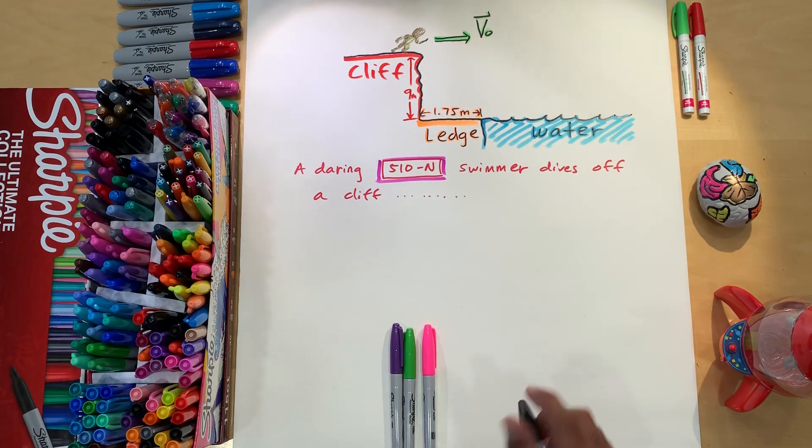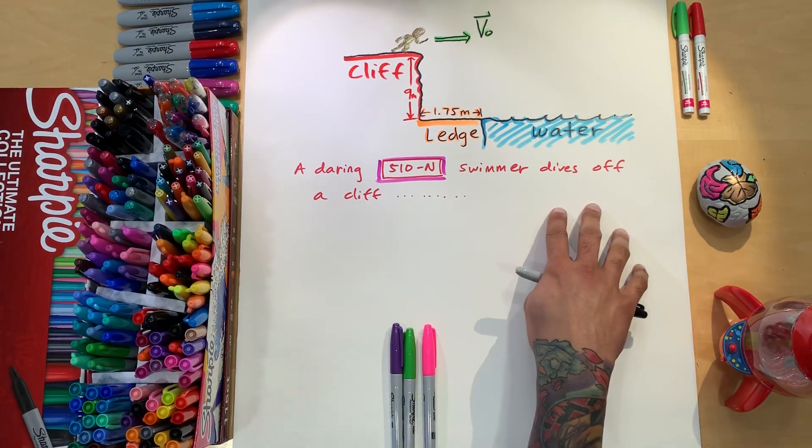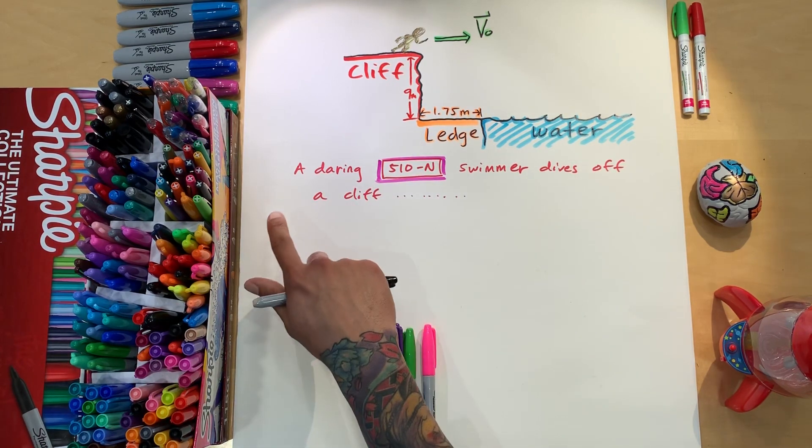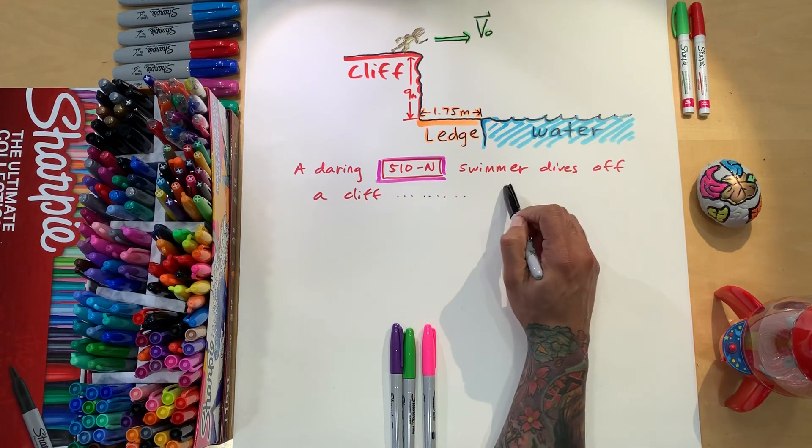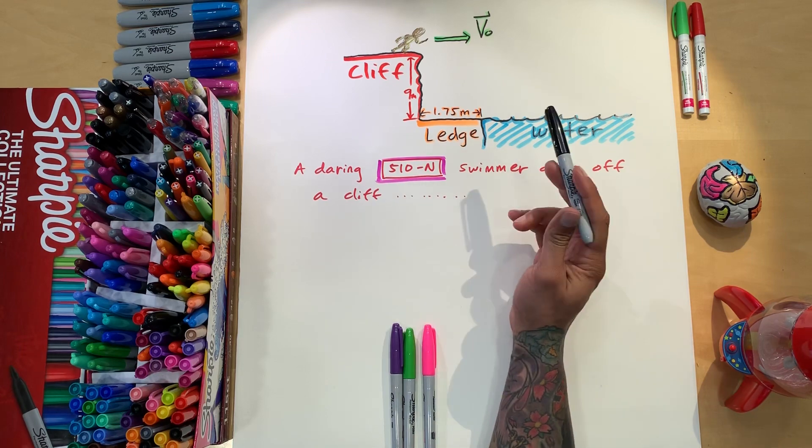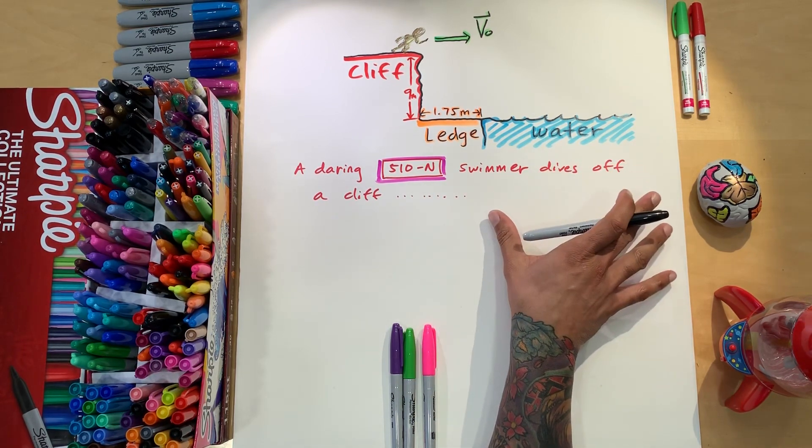So that's the setup. So anyway, I'm gonna read what they wrote. And I stopped writing because this is the part that I just wanted to show. So it says a daring 510 Newton swimmer dives off a cliff with a running horizontal leap. And then the next part is the question.